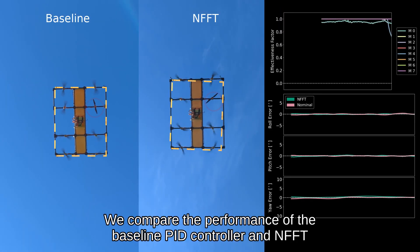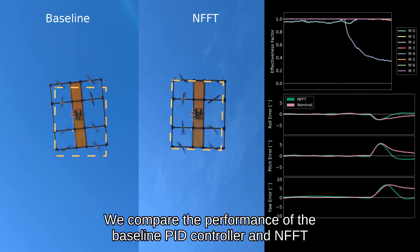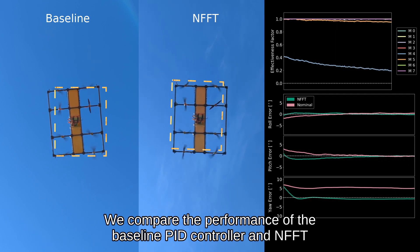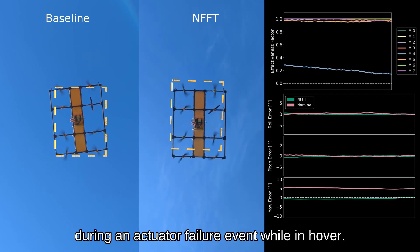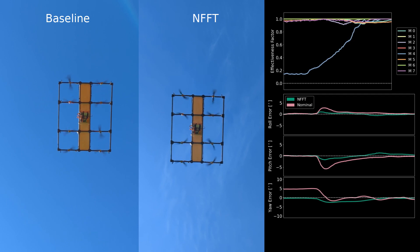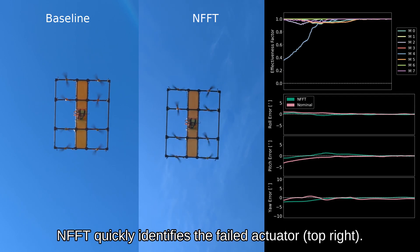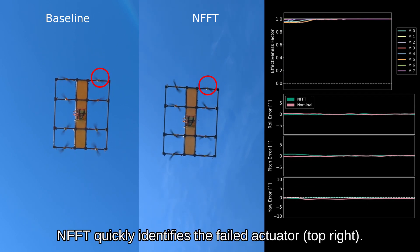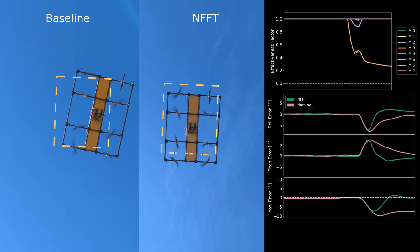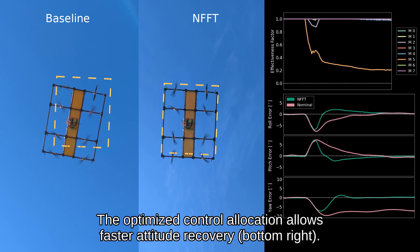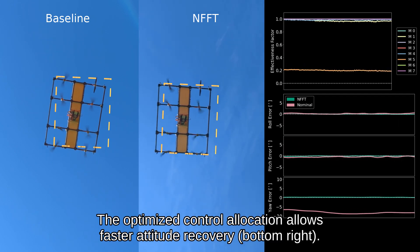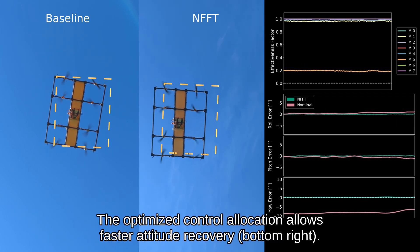We compare the performance of the baseline PID controller and NFFT during an actuator failure event while in hover. NFFT quickly identifies the failed actuator, and the optimized control allocation allows faster attitude recovery.